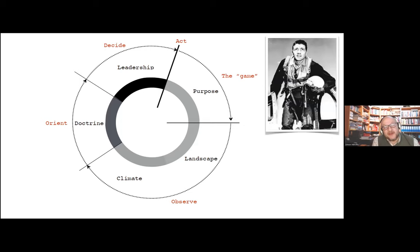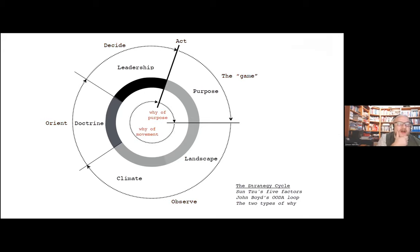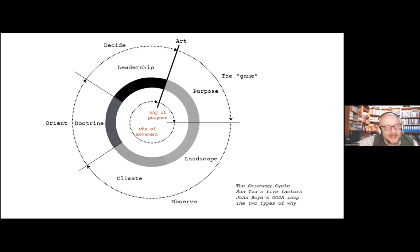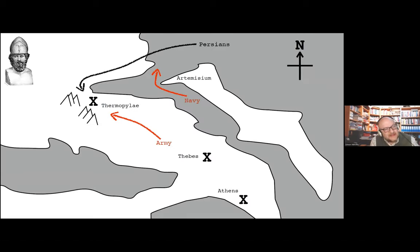This overlapped with the work of John Boyd — known as the OODA loop, heavily used in military and political circles. The first O is to observe the environment — that's what landscape and climatic patterns are about. The second O is to orient around the space — that's what doctrine and principles are about. Then you decide where you're going to attack, and then you act. At the heart of this are two whys: the why of purpose — your moral imperative to do something — and the why of movement — why do I make this choice over that choice.